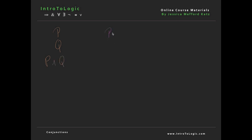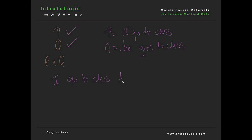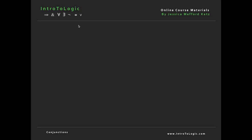Let's define P as 'I go to class' and Q as 'Joe goes to class'. According to the and introduction rule, because I have the premise 'I go to class' and the premise 'Joe goes to class', we can conclude 'I go to class and Joe goes to class'. It's very intuitive. According to and elimination, which is our second rule having to do with conjunctions, we can take any single 'and' sentence like P and Q and separate the two conjuncts.